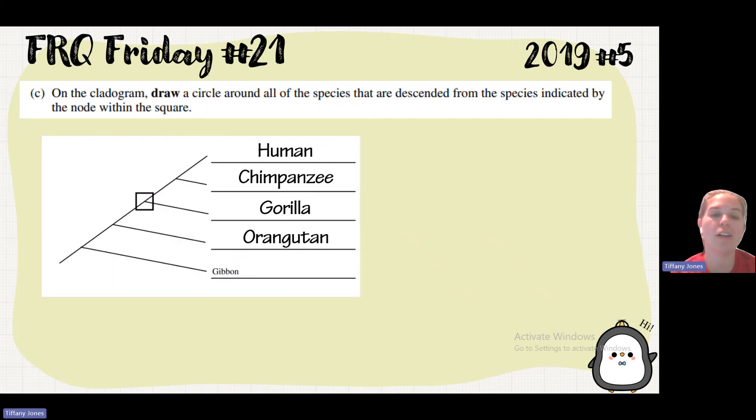Part C says on the cladogram, draw a circle around all of the species that are descended from the species indicated by the node in the square. So here is our node. And I always think about it like driving down a road. Everything after this point is related to this organism. So the gorilla, the chimpanzee, and then the human are all coming from this divergence point.